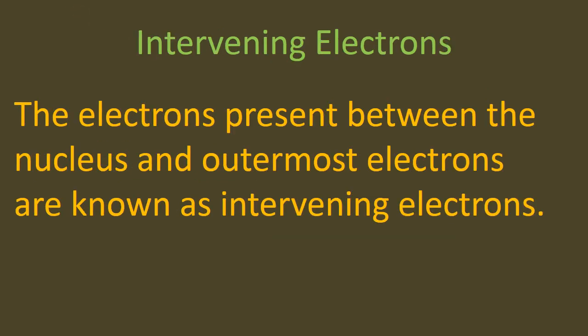The electrons present between the nucleus and the valence shell are called intervening electrons. So, the electrons present between the nucleus and the outermost electrons are known as intervening electrons.